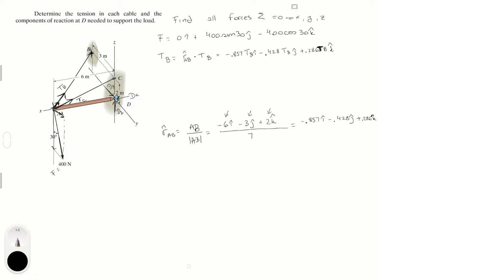Now we do the same steps for TC. We need the unit vector from A to C, which is the vector AC over its magnitude. The vector AC is (−6i + 0j + 2k), divided by √(6² + 0² + 2²) = 6.32. That gives −0.949i + 0j + 0.316k. So TC in Cartesian form is: −0.949·TC in the i, plus 0 in the j, plus 0.316·TC in the k.